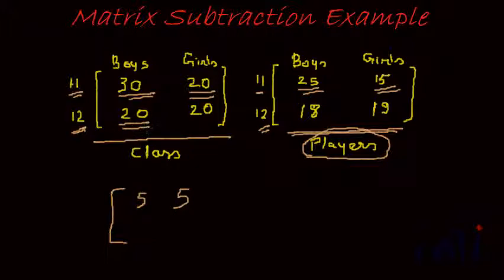Boys in class 12 is 20 and boys who are players in class 12 is 18. So the non-players would be 20 minus 18 which is 2. Similarly, girls in class 12 and players who are girls in class 12 is 13. So 20 minus 13 which would be 1, which would give the number of girls in class 12 who do not play any game.